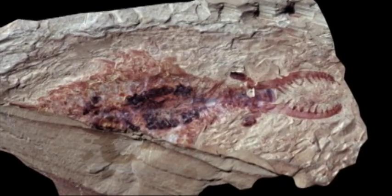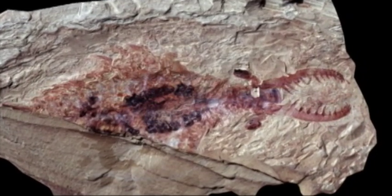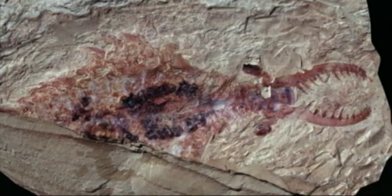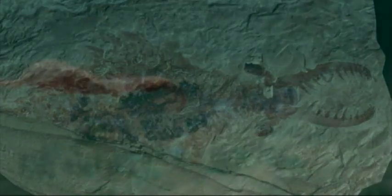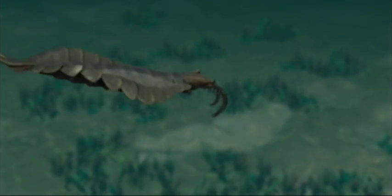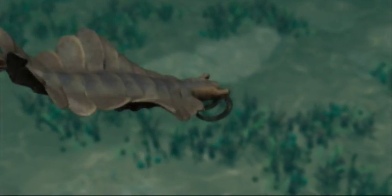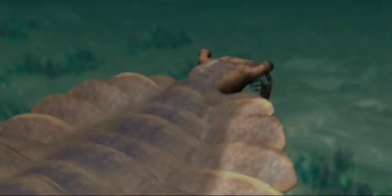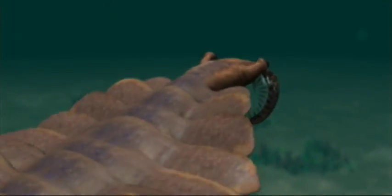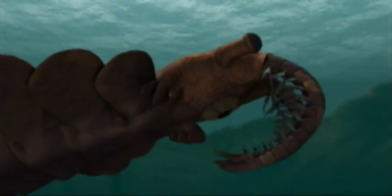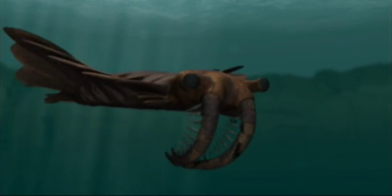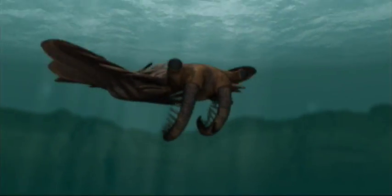How did these new animal body plans and fundamentally new forms of life come into existence? This was the mystery that Darwin set out to solve. But everything we've learned in biology over the last 50 years has brought this mystery back with a vengeance. How do you explain the origin of the Cambrian animals seemingly out of nowhere?